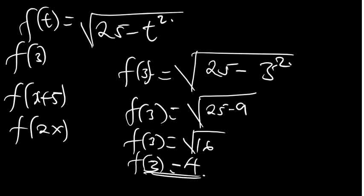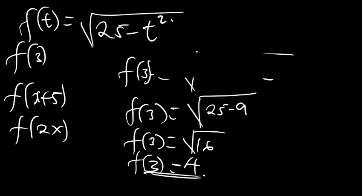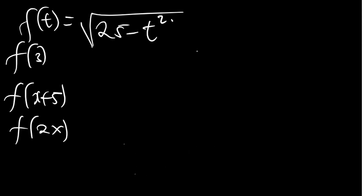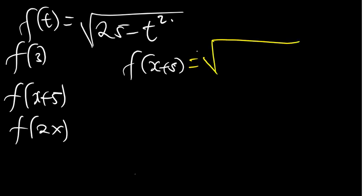Now for part 2, they want us to find f of x plus 5. Wherever there is t, we put x plus 5. So it's going to be the square root of 25 minus open bracket x plus 5 close bracket, but since t is squared, we have to square this whole expression.